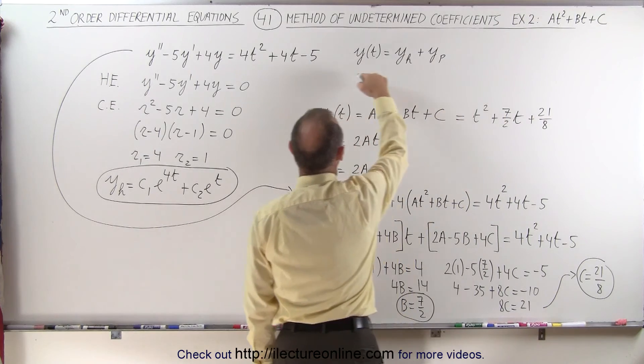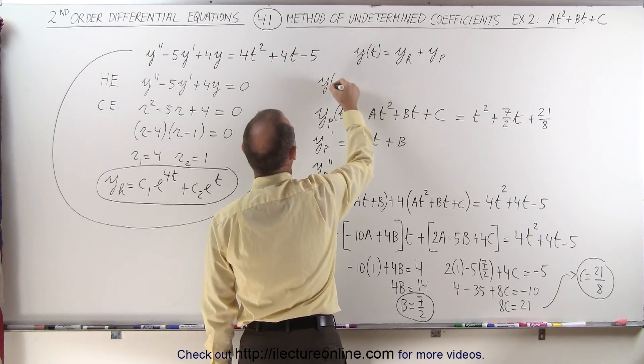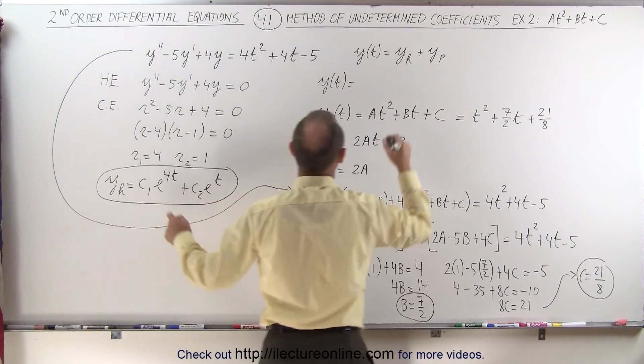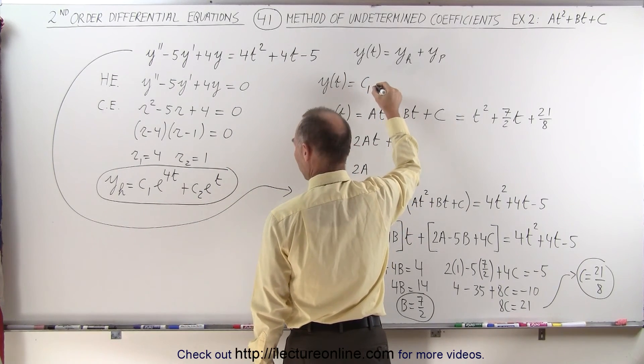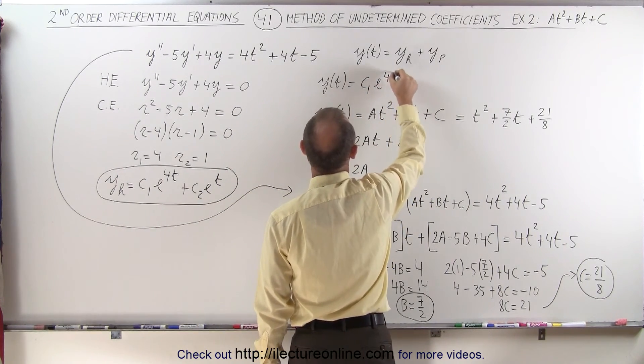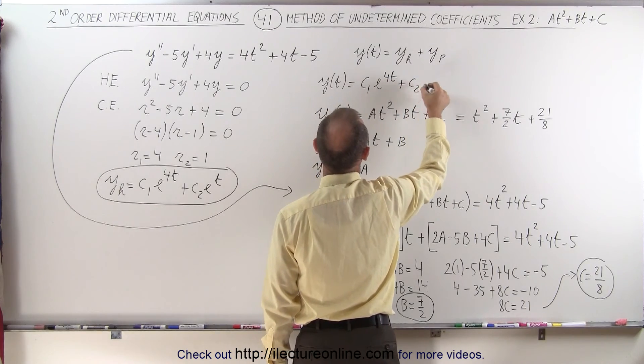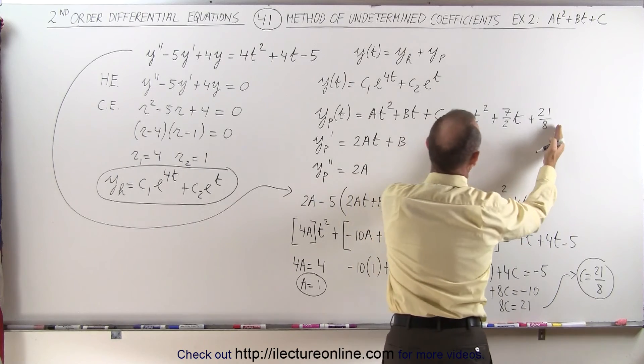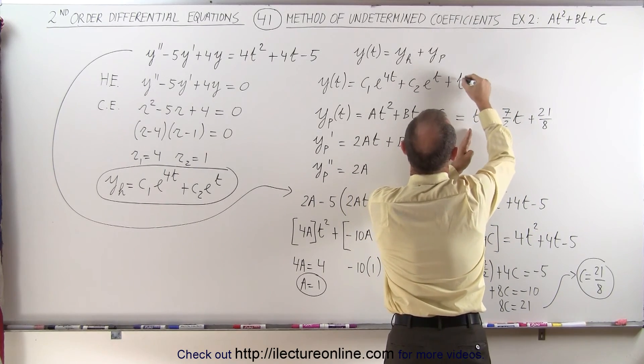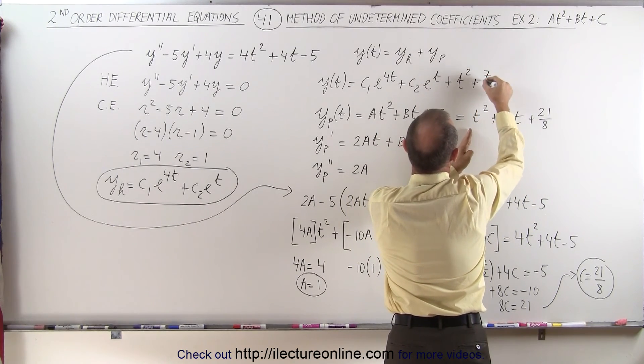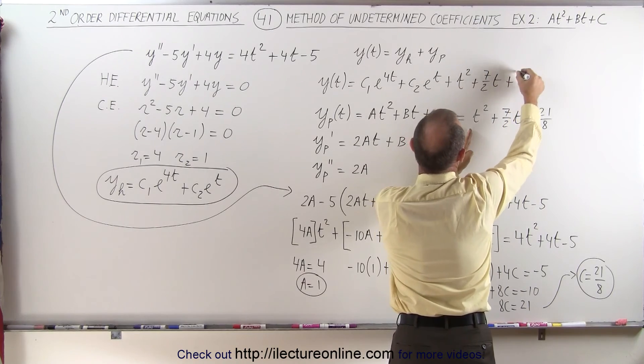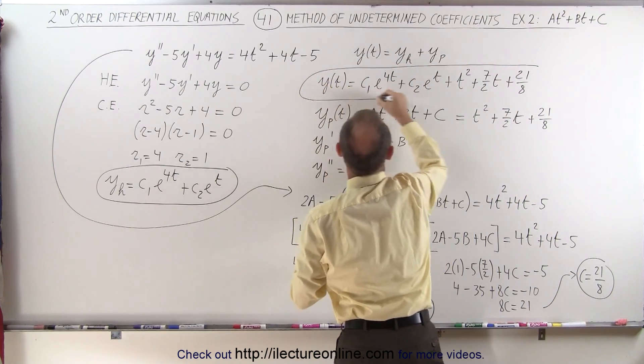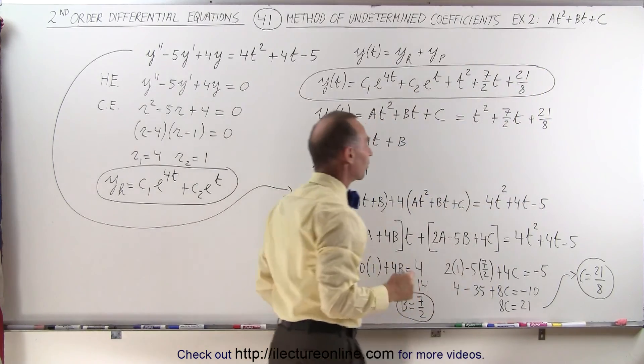And that means that our full solution, y is a function of time, is equal to the homogeneous part, which we found right here, which is c1 e to the 4t plus c2 e to the t, plus the particular solution, which we have over here. So plus t squared, plus 7 over 2t, and plus 21 over 8. And now we have the complete solution to our original differential equation.